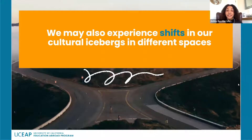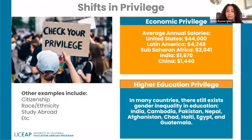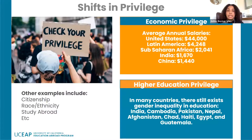In different cultural spaces, we may experience a shift in our cultural icebergs. One shift could be a shift in privilege. When I studied abroad as a low-income, first-generation transfer student of color, I didn't consider myself privileged at all — I worked two jobs as a waitress and bartender just to afford it, and I still had to take out loans. But what I found is that economic privilege changes drastically in other cultural environments. While I identified as a low-income student, in places like Mexico and Brazil, I would technically be considered middle class because of the average salaries in Latin America and my access to the American dollar, which is a stronger form of currency there.